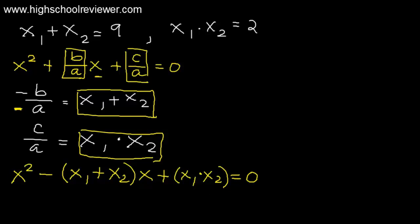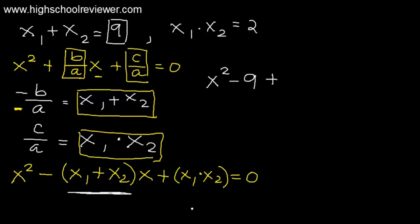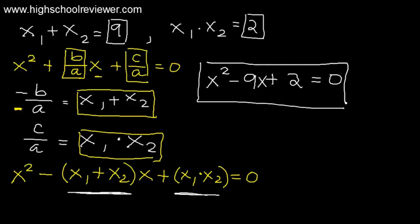Substituting the values, our quadratic equation becomes x squared minus 9x plus 2 equals 0. So x squared minus 9x plus 2 equals 0 is our final answer.